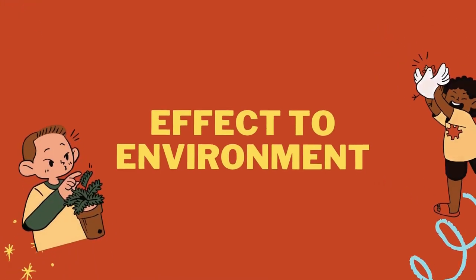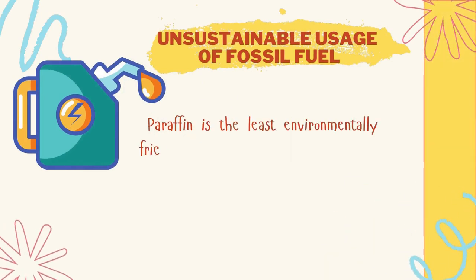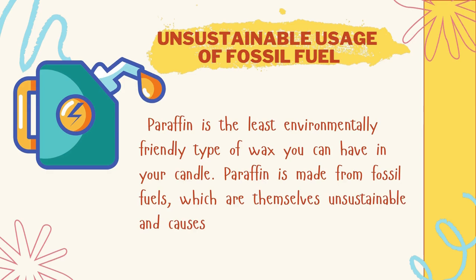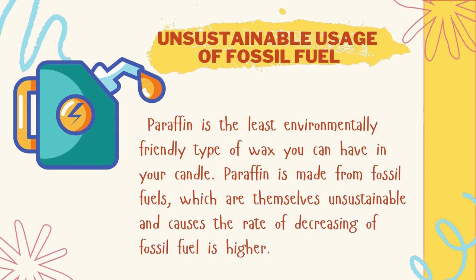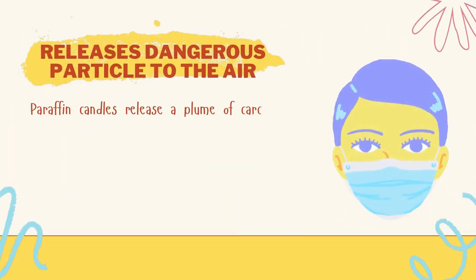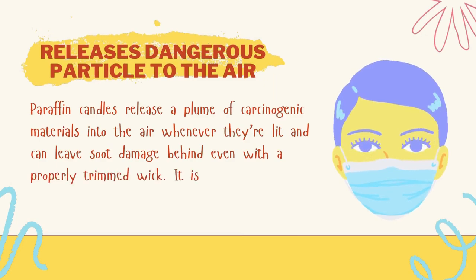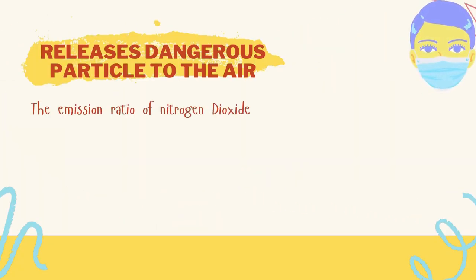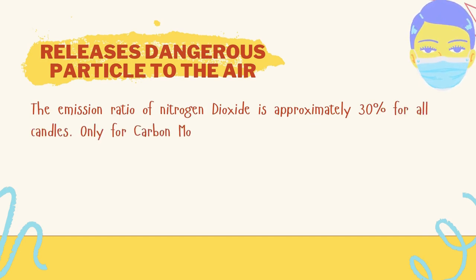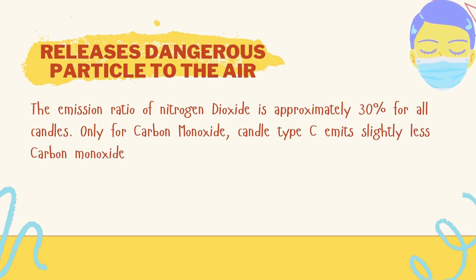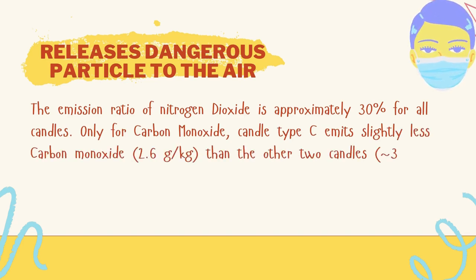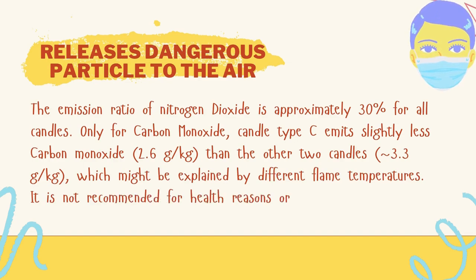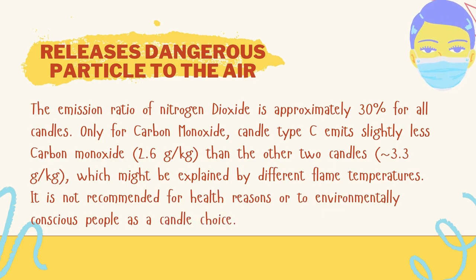Effect on the environment — Unsustainable usage of fossil fuel: Paraffin is the least environmentally friendly type of wax you can have in your candle. Paraffin wax is made from fossil fuels, which are themselves unsustainable and causes the rate of decreasing of fossil fuel to be higher. Paraffin candles release a plume of carcinogenic materials into the air whenever burnt. The emission ratio of nitrogen dioxide is approximately 30% for all candles. For carbon monoxide, candle type C emits slightly less — 2.6 grams per kilogram — than the other two candles at approximately 3.3 grams per kilogram, which might be explained by different flame temperatures. It is not recommended for health reasons or for environmentally conscious people as a candle choice.